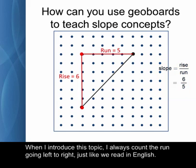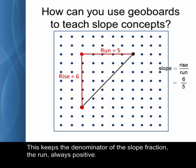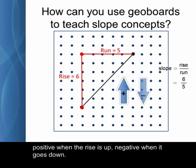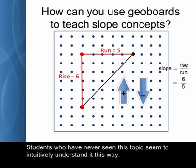When I introduce this topic, I always count the run going left to right, just like we read in English. This keeps the denominator of the slope fraction, the run, always positive. It's the numerator that will determine the sign, positive when the rise is up and negative when it goes down. Students who have never seen this topic seem to intuitively understand it this way.